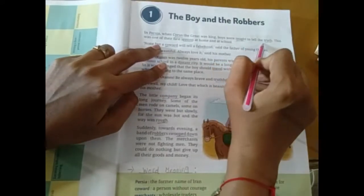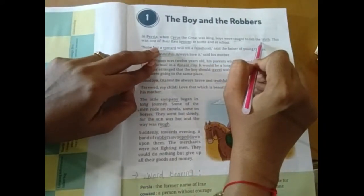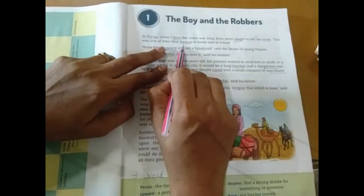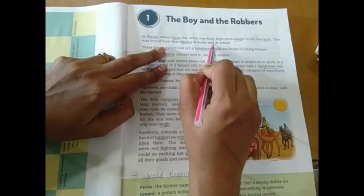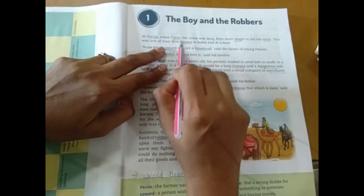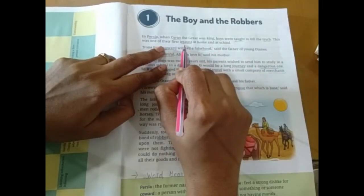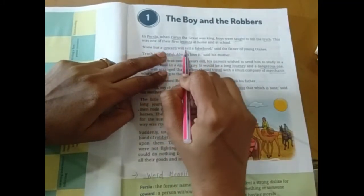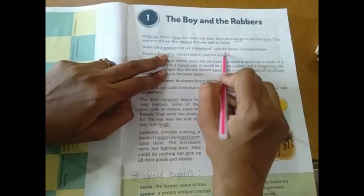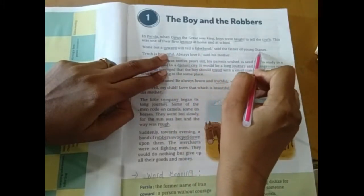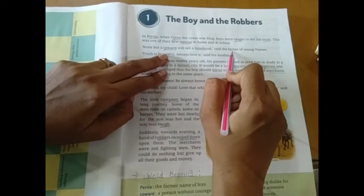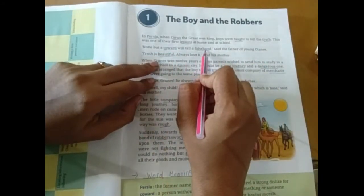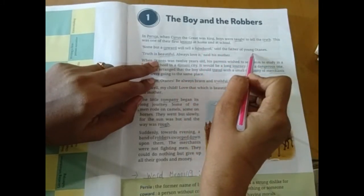Boys were taught to tell the truth. Kya sikhaya jata tha? Truth, yani ki sach bulna sikhaya jata tha. This was one of their first lesson at home and at school. School ho, yaya ghar ho, amesha eki lesson first of all sikhaya jata tha kya? Woh truth.